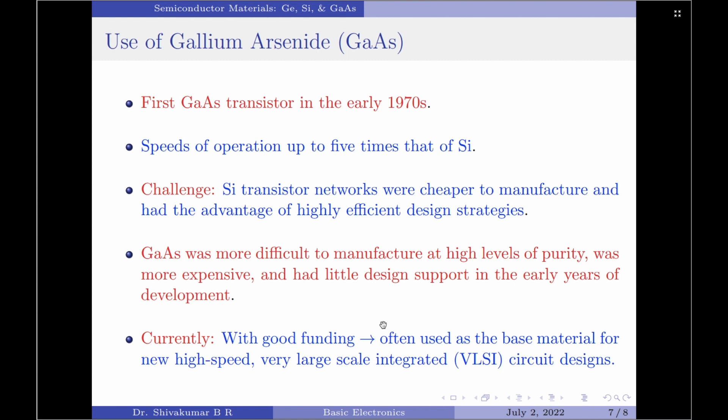However, the problem that semiconductor industry faced at that time was because of the years of intense design efforts and manufacturing improvements using silicon, silicon transistor networks for most applications were quite much cheaper to manufacture and had advantages of highly efficient design strategies.